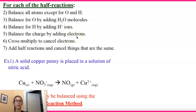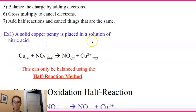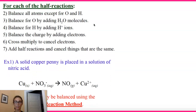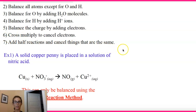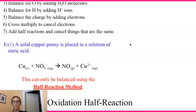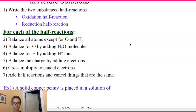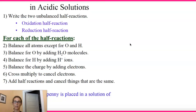Then you want to do a total charge calculation on both sides of the reaction, and then you're going to add electrons to whichever side you need in order to balance that charge. Then you're going to cross-multiply both half-reactions to cancel electrons, and then add those two half-reactions and cancel anything that is exactly the same on both sides. These steps are for acidic solutions.